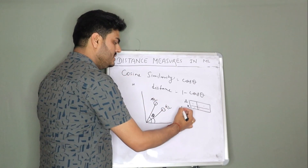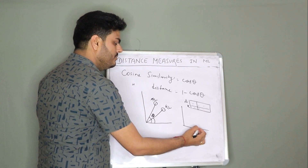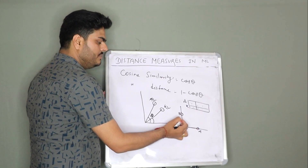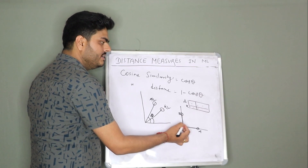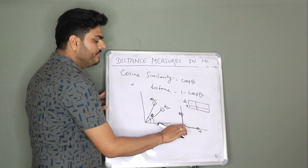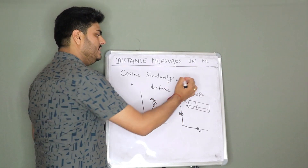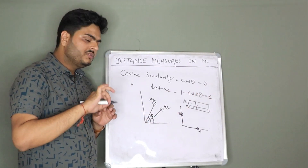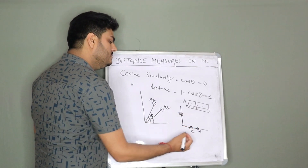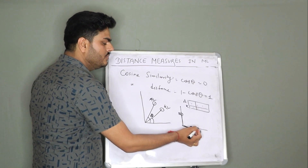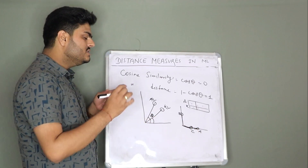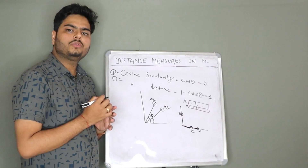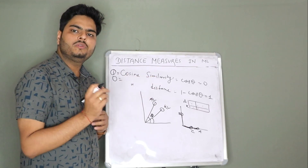Let us try to understand with another example. Let us say point A is somewhere here and point B is somewhere here. The A vector will be this and the B vector will be this. What is the angle? 90 degrees. If the angle is 90 degrees, what is the value of cos 90? The value is 0. Hence, similarity for this will be 0 and distance will be 1. Now imagine there is one point C here at angle 0. Cos 0 is 1. So similarity will be 1 and distance will be 0. This is how cosine similarity and cosine distance are calculated between any two points.